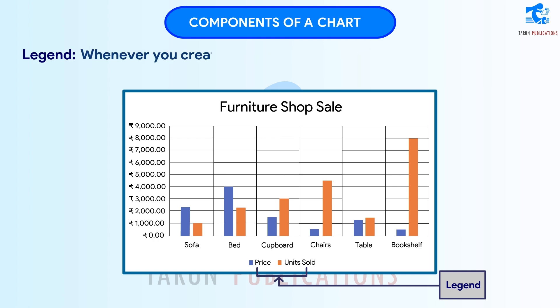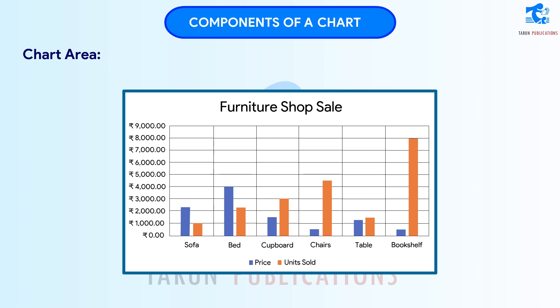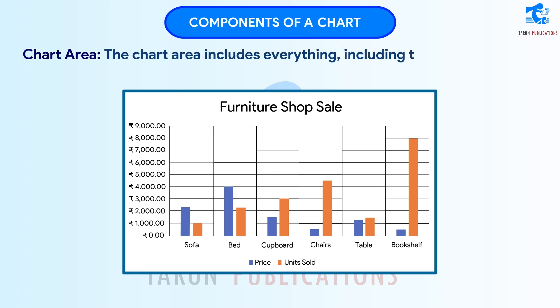Legend: It helps readers understand the charted data. Whenever you create a chart in Excel, a legend for the chart is automatically generated at the same time. Chart Area: The chart area includes everything, including the plot area.